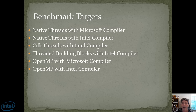The first will be native threads with the Microsoft Compiler. The second will be native threads with the Intel Compiler. Third, we will look at Silk. Silk can only be used within the Intel Compiler. However, it will still give us a really good idea of its performance.